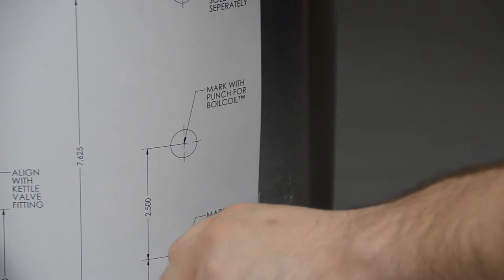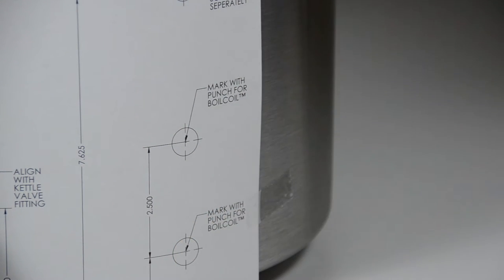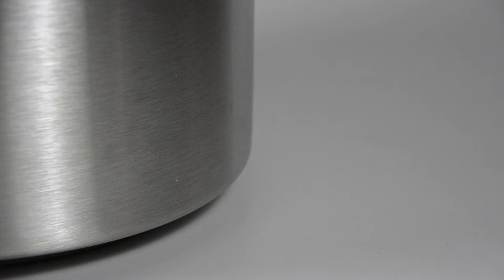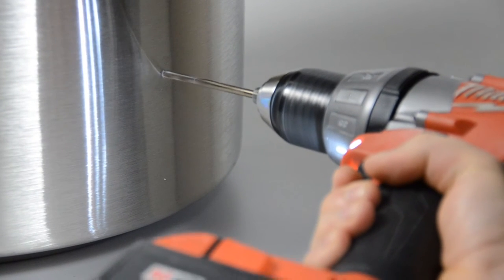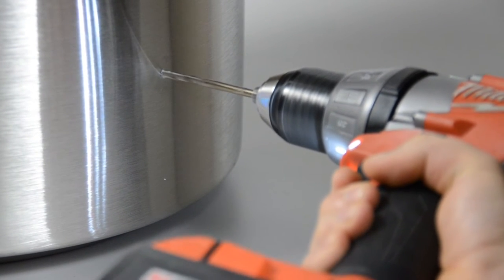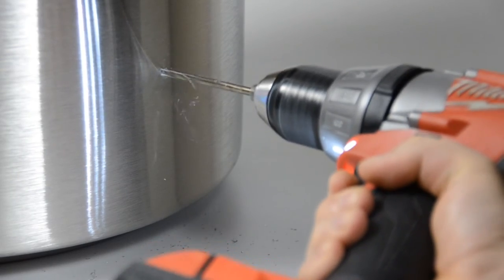Locating the holes accurately is critical to the installation of the heater coil. If necessary, use the automatic center punch multiple times to increase the depth of the indentation. Make certain the center punch marks are indented deep enough to prevent the drill bit from moving off the mark when you start drilling.